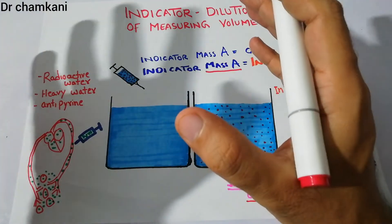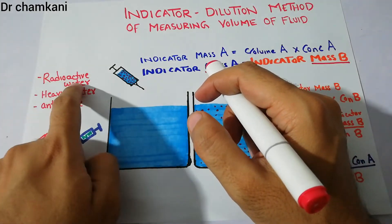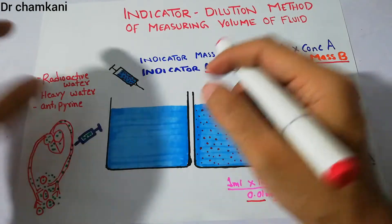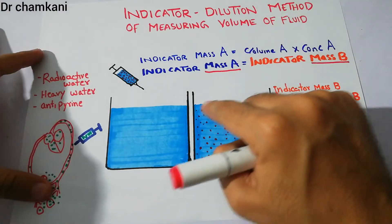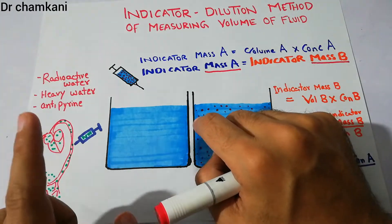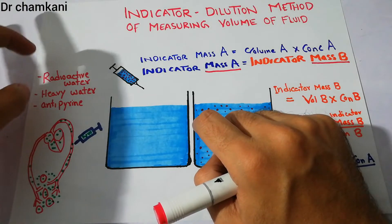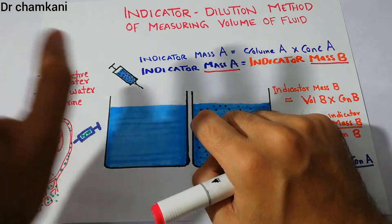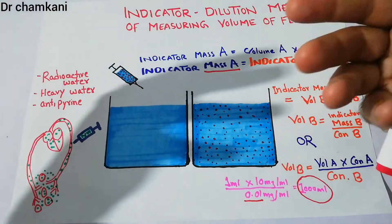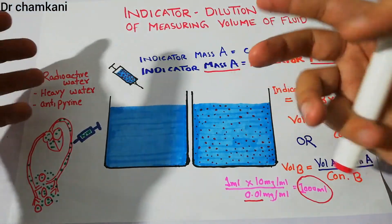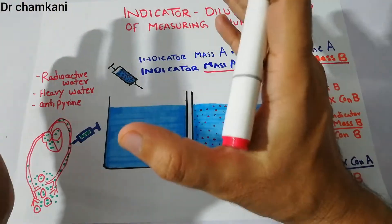The indicators used to measure total body water are radioactive water, heavy water, or antipyrine. These substances have the qualities to properly distribute, they will not be metabolized, and they will not leave the system. They fulfill all the criteria for an indicator to be used as a method to calculate the volume.